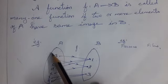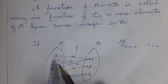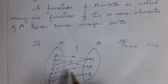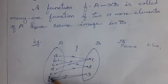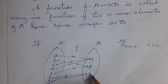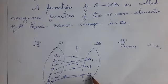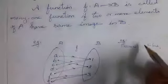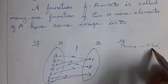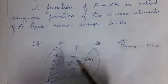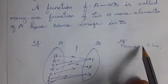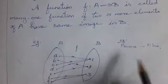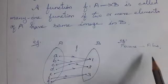To remember, take 'many' and 'one' — many-one function. Also, b and d have image 2, and f and g have the same image in B. You can remember this like more than one person joining in one filling.